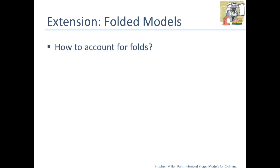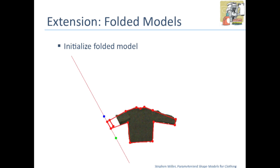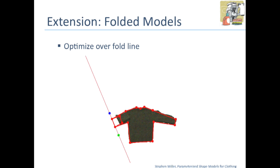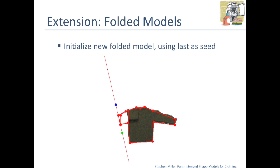To extend this to possibly folded clothing articles, from any model we can generate a new folded model by augmenting the parameters with an additional parameter representing a fold line on the clothing. We can then infer the new contour and landmark points geometrically from the location of the old ones and the new fold line. Optionally, if we know the model won't move, we hold all other parameters fixed and only optimize over the fold line. Multiple folds can be defined recursively — starting with a spread out model, after executing one fold we get a folded model, and if we want to introduce a second fold, we fold that model, et cetera. So we initialize a folded model with a guess at where the fold line would be, optimize over its location, and once localized, introduce the next fold model and repeat.